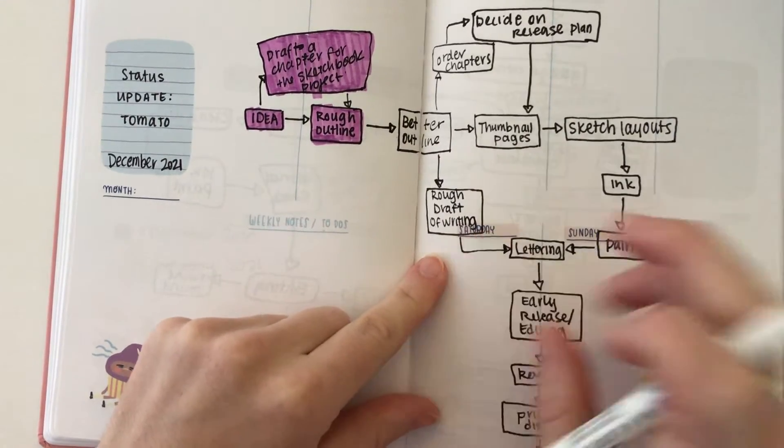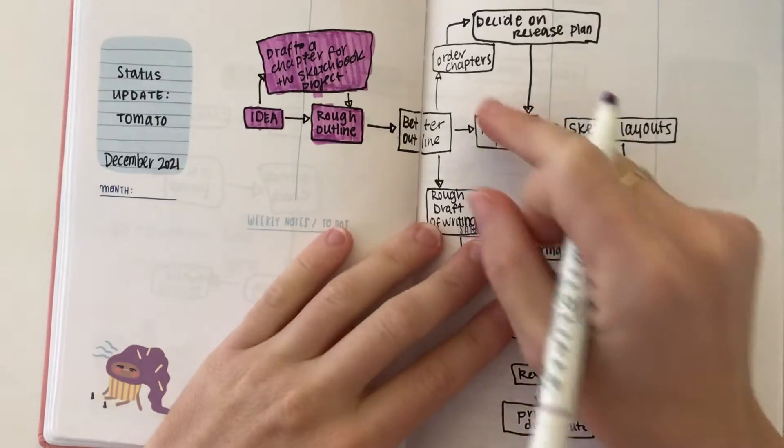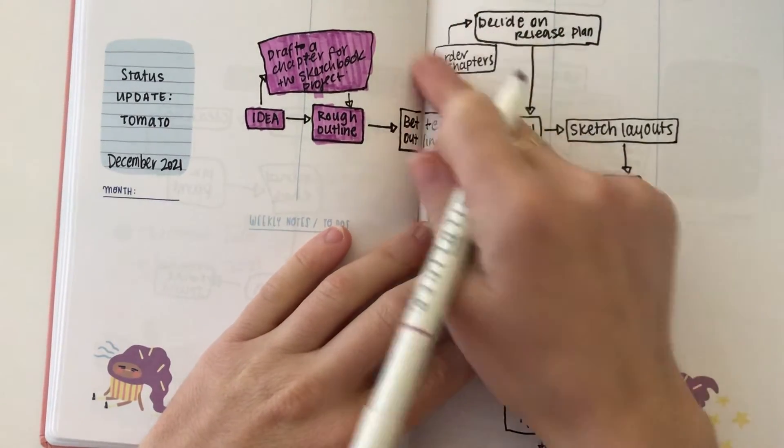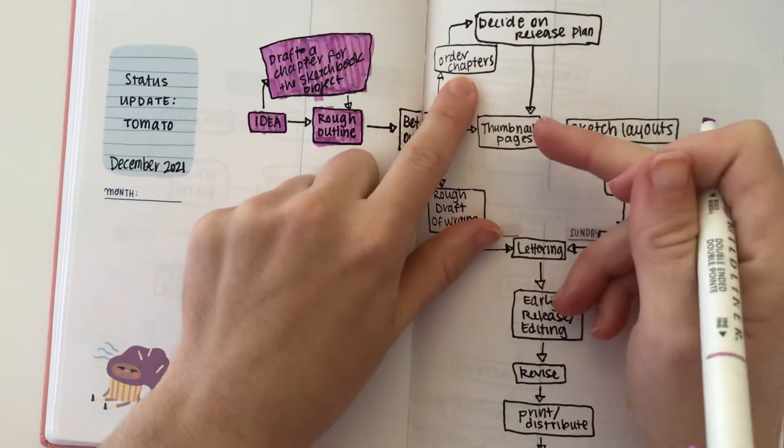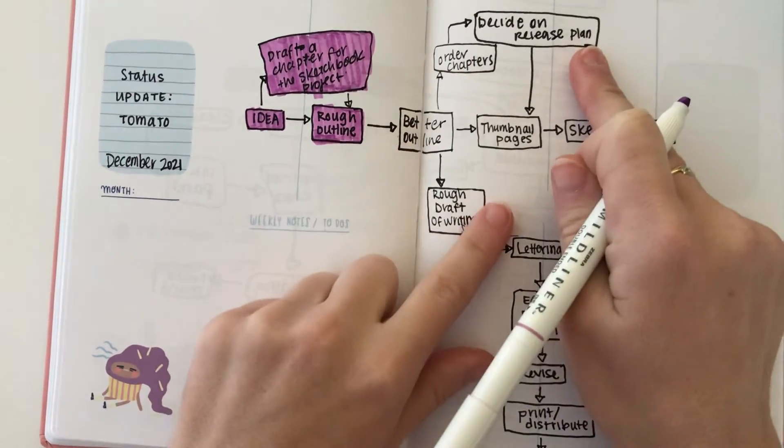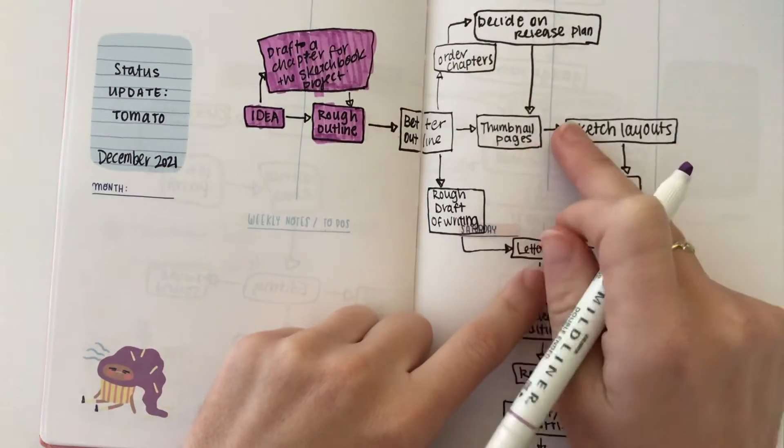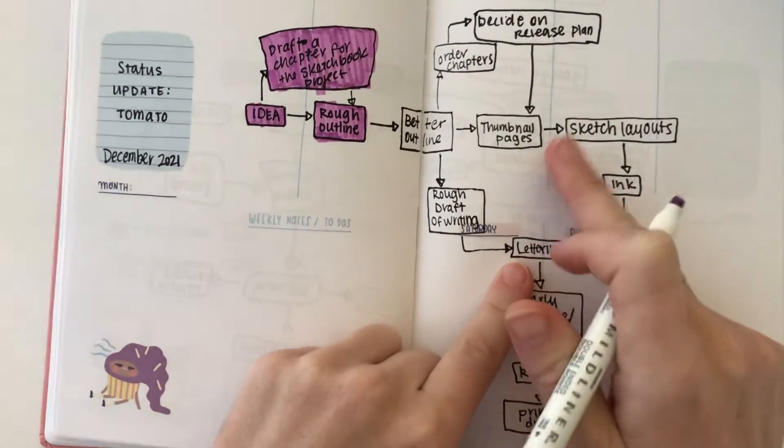Actually I should say the writing one is more here, that's my mistake. So one where I'm focused on the rough draft of the writing where it's more fleshed out, and the other where I'm just focused on maybe the visual design where I have a plan for how to order the chapters, I have a plan for how to release it.